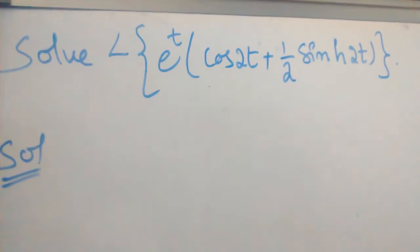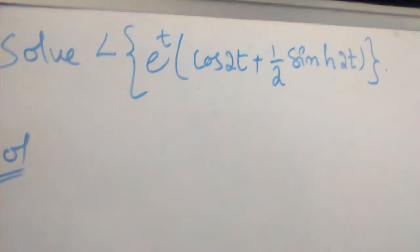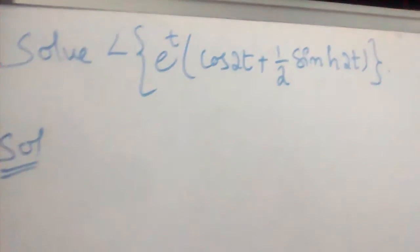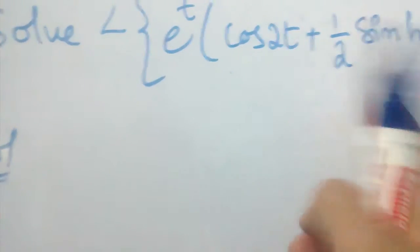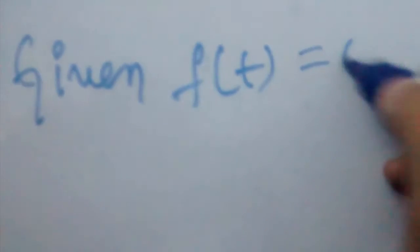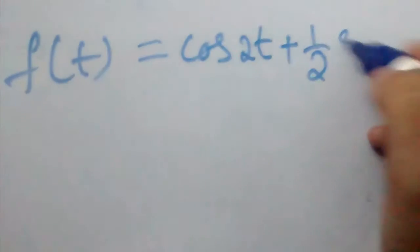The problem given is: solve L{e^t · (cos2t + ½ sinh2t)}. This is in the form of the First Shifting Theorem because along with the two terms we have e^t. So f(t) = cos2t + ½ sinh2t. First we will find f(p) using this f(t), then later we will apply the First Shifting Theorem.